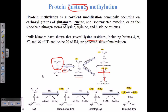For lysine residues, HMT (histone methyl transferase) will come and, with the help of ADAMAT, attach a methyl group to one of the nitrogens, converting lysine into monomethyl lysine. A second round of methylation is also possible, producing dimethyl lysine. For lysine, the second methylation is only one type — it is always symmetrical dimethyl lysine.